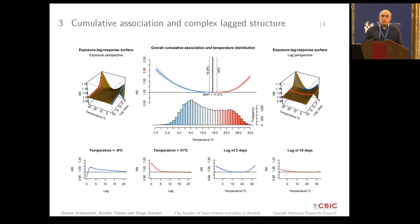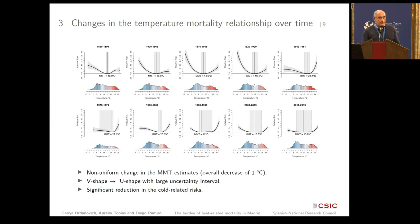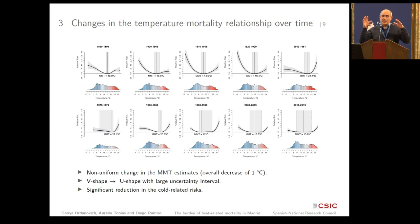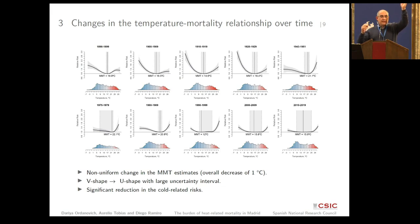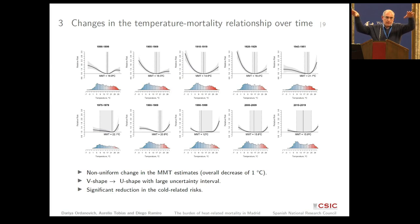What we want to see is the evolution through time, and that is what this graph is showing. If you want to focus on how 19th century or early 20th century mortality was related to temperature, it will be like the one you can see in 1910 to 1919, which is basically a very strong effect of cold and then as well an effect of hot weather.